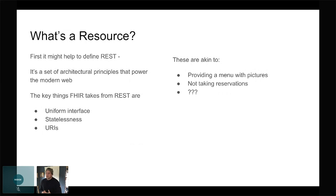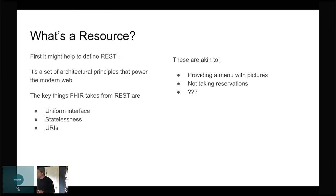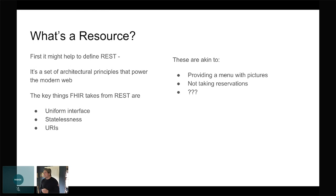The first REST principle is the uniform interface. If you've ever seen HTTP verbs — GET, POST, PUT — that's the idea. There's a consistent set of verbs you can act on resources with, and no matter where you go, you can expect the same behavior. If the request is being proxied through multiple servers, the language doesn't change. In the restaurant analogy, the uniform interface is like providing a menu with pictures. If you go to a French restaurant in France and don't speak French but they have pictures, that's a universal interface — you can point and say, 'I like that.'